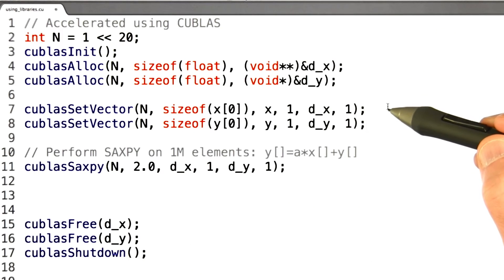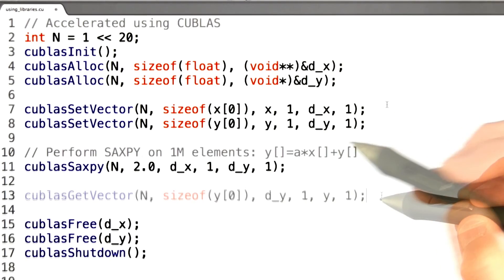Finally, we need to set the vectors, so copying the data over to the GPU, and get the result back.